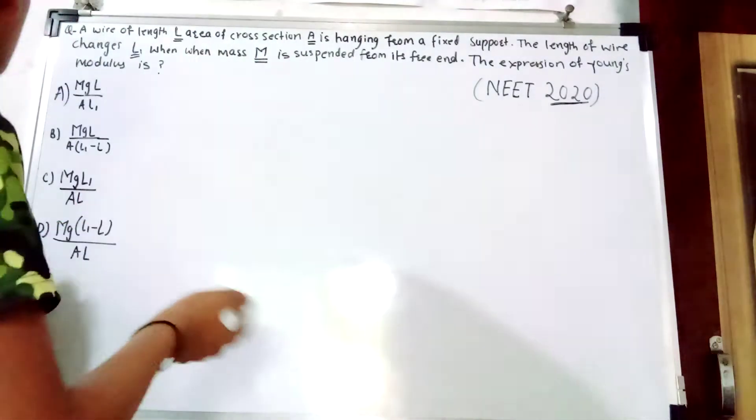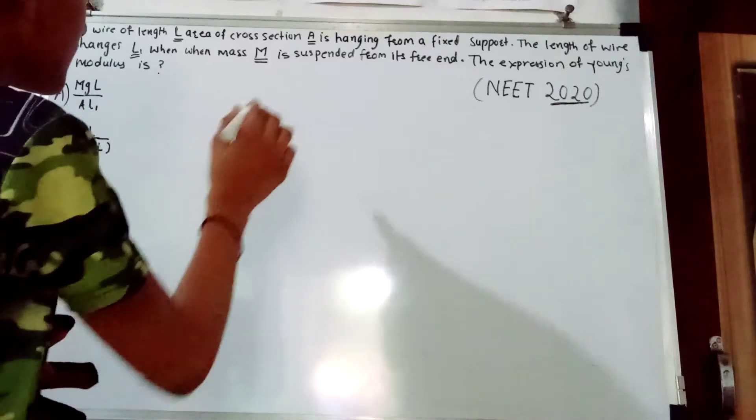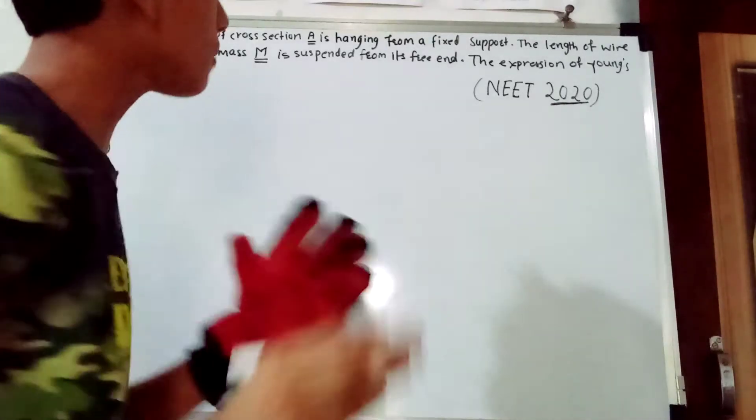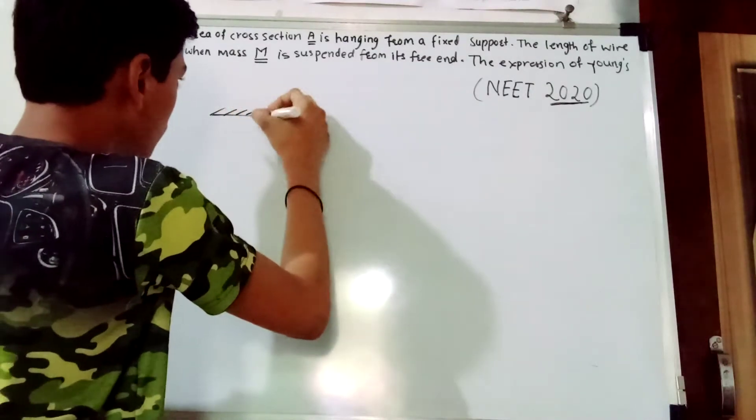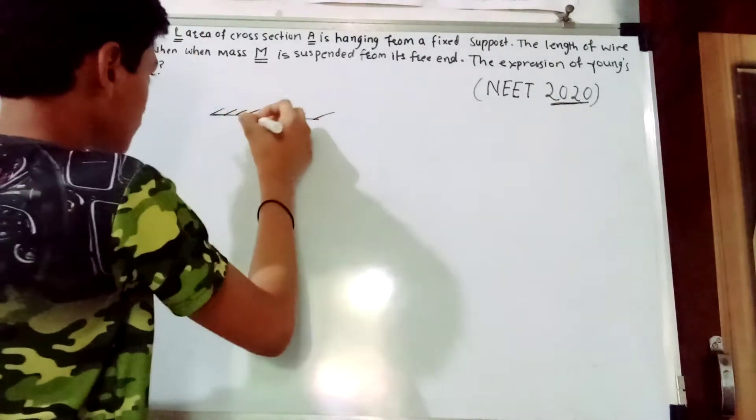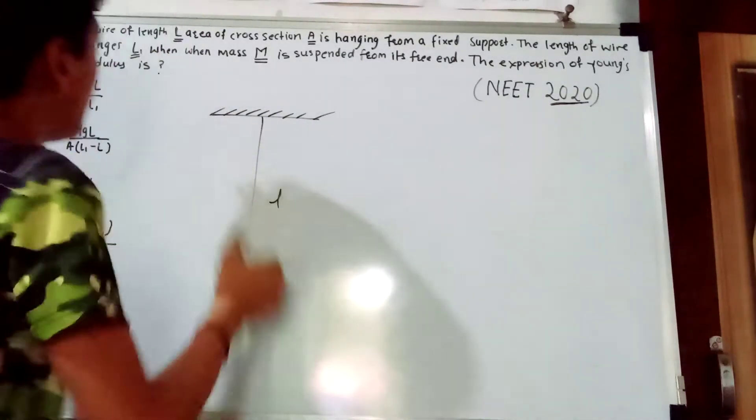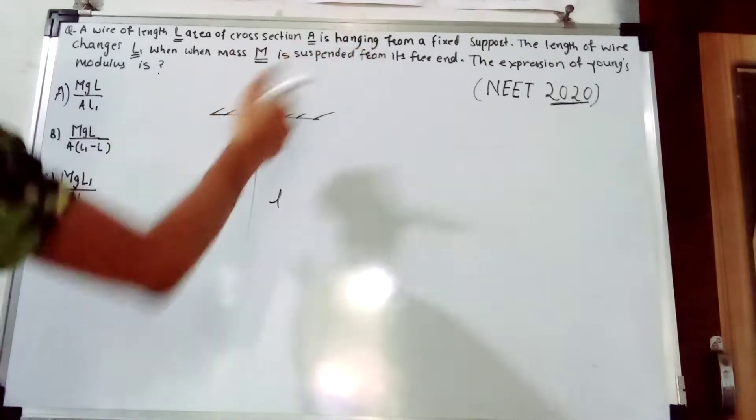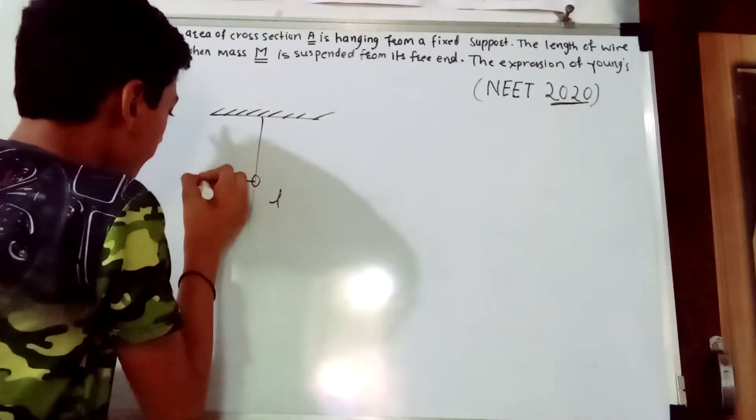So let's begin. The question says a wire of length L and area of cross-section A is hanging from a fixed support. This is the fixed support, and this is that wire of length L and cross-section area A.